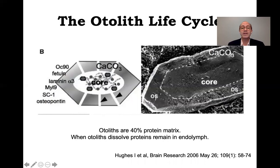Contrary to most concepts of the otoliths, otoliths are not all made of calcium carbonate. Only about 60% of the mass of the otolith is calcium carbonate; the remaining 40% is actually protein matrix. This protein is important because when calcium dissolves, the proteins remain in the endolymph for some time and may change viscosity and some of the modeling of BPPV that we depend on. There are proteins in the core, proteins extending from core to surface, proteins covering the surface, and proteins which bind one otolith to another in a complex net.